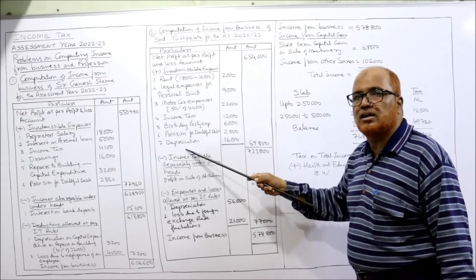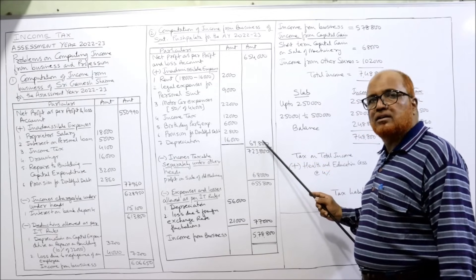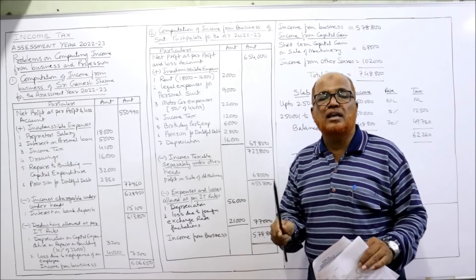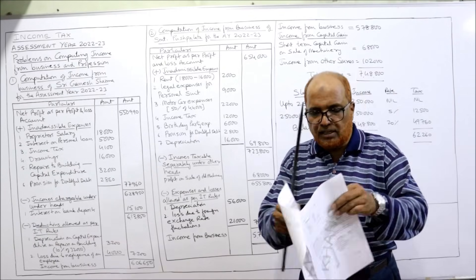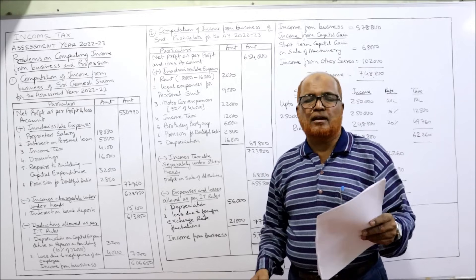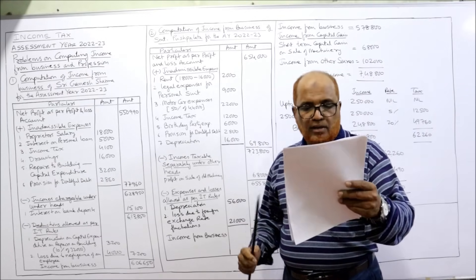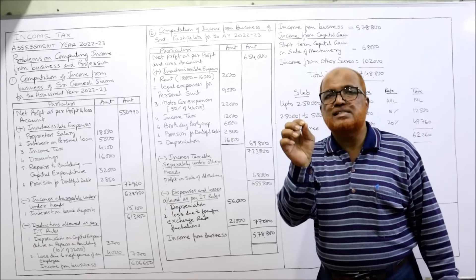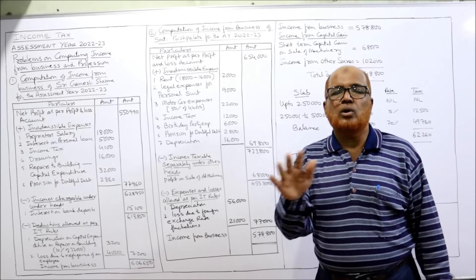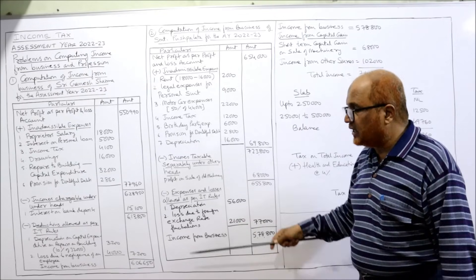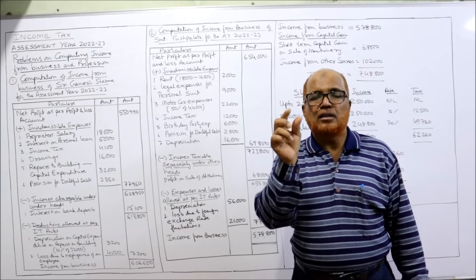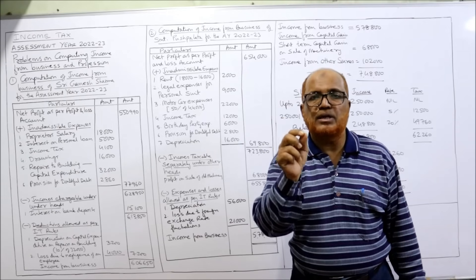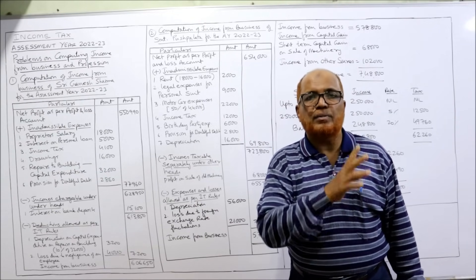These are all the disallowed items on the debit side — total 69,800. Adding to net profit: 6,54,000 + 69,800 = 7,23,800. On the credit side, gross profit is business income. Rent from subletting — already considered. Profit on sale of old machinery: according to the Income Tax Act, any profit arising on the sale of a depreciable asset is always treated as a short-term capital gain — write this in the working note. It is taxable under income from capital gains, not under business income.